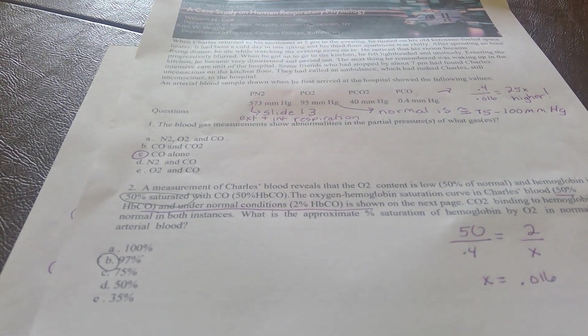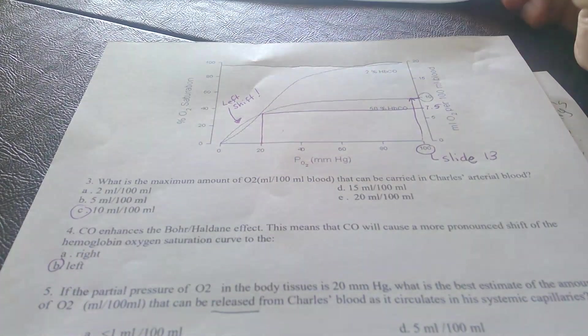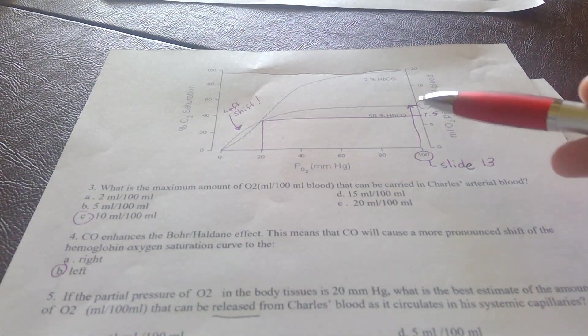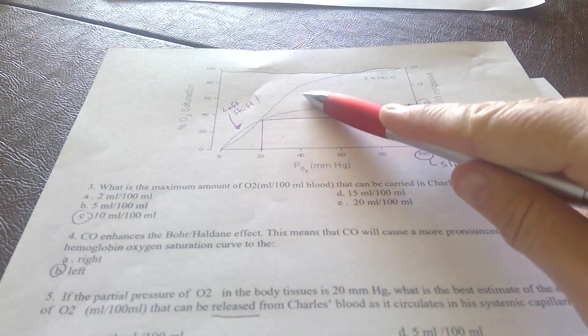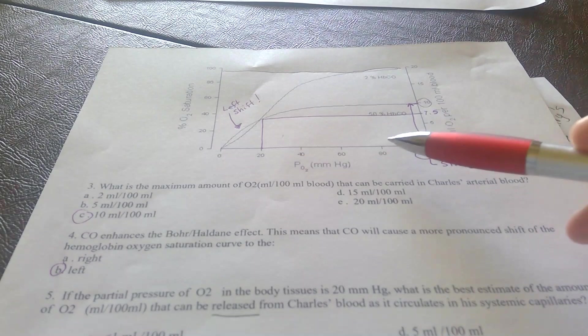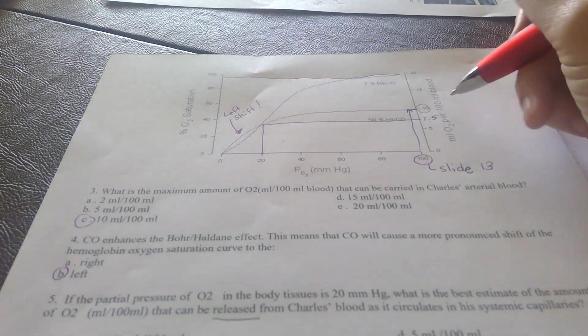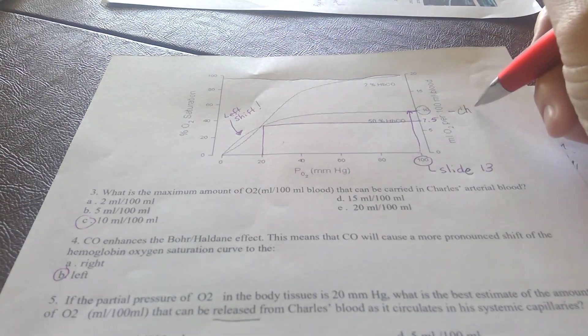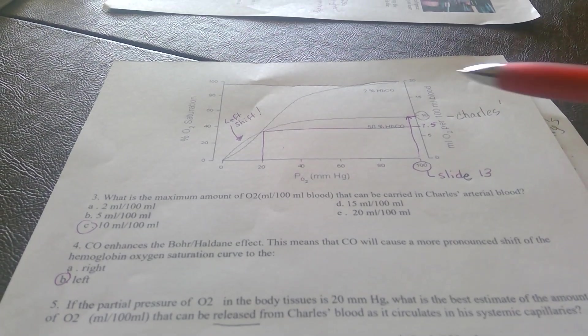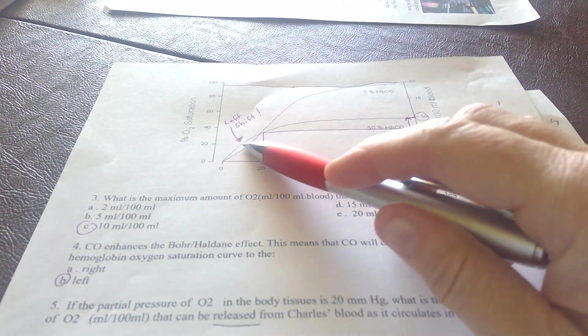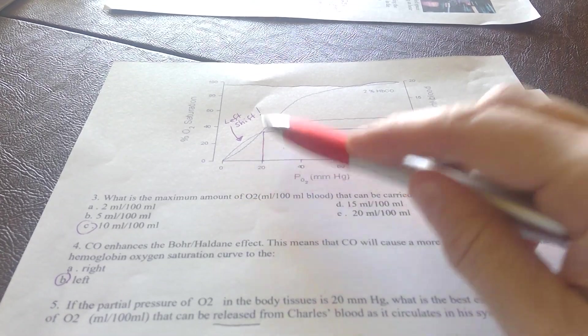How do we solve question two? We have to go to the graph. Here we see normal oxygen-hemoglobin dissociation curve and then below it we see Charles. Charles's oxygen-hemoglobin dissociation curve shifts to the left, and I'll address that later.